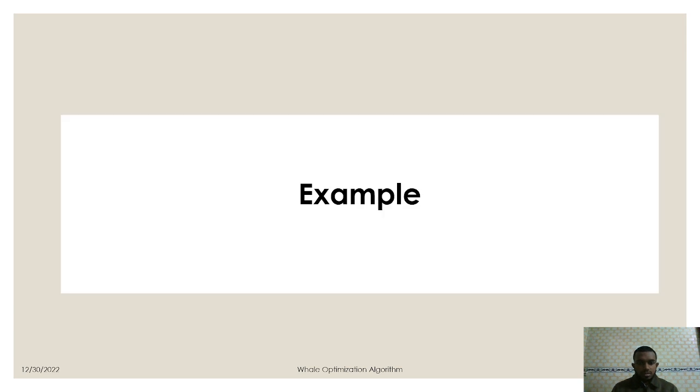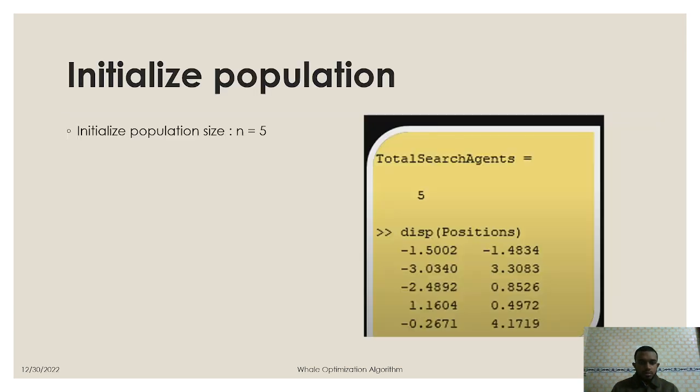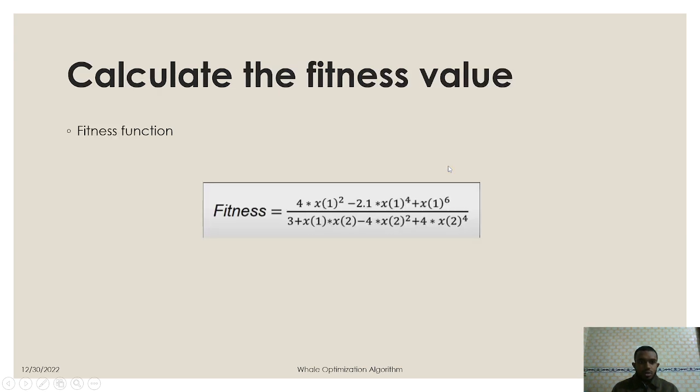Now let's see an example. So here we have initialized the population with the number of n where n is equal to five, that means we have five size of population. And we have randomized some values, five values, and then the next steps we have to calculate the fitness value. We'll calculate the fitness value with the help of this equation.